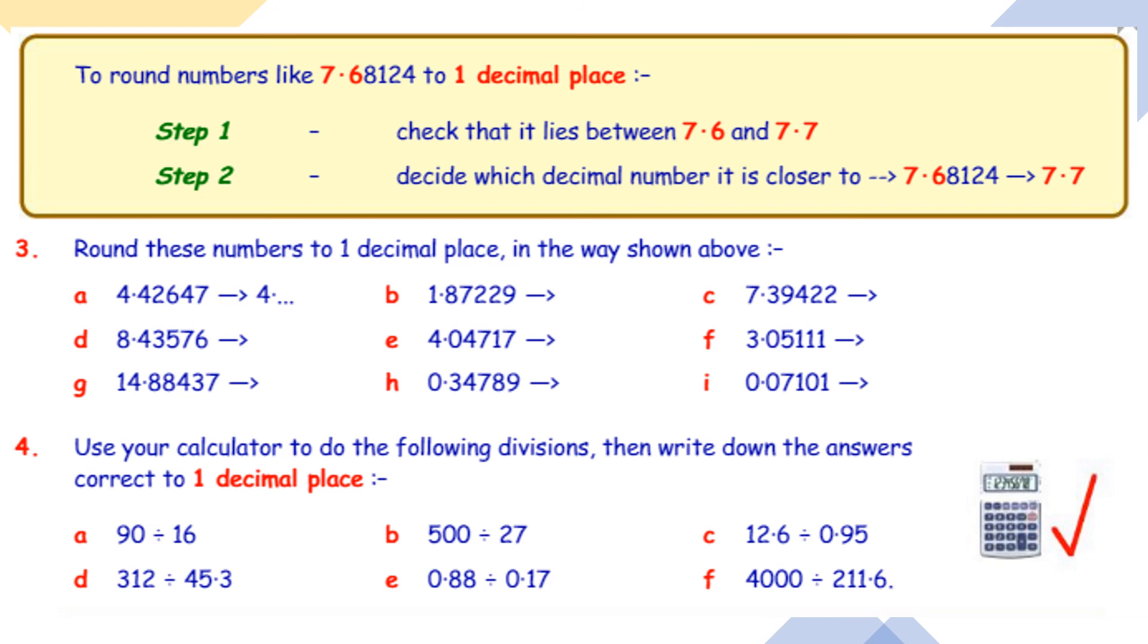Okay, four. We've done one like this already. Use your calculator to do the divisions, so 90 divided by 16, and it will give you a decimal number. Find the one that's in the second decimal place and use that number to decide whether to round up or round down to the first decimal place. Okay, any questions let me know and I hope you get on well.